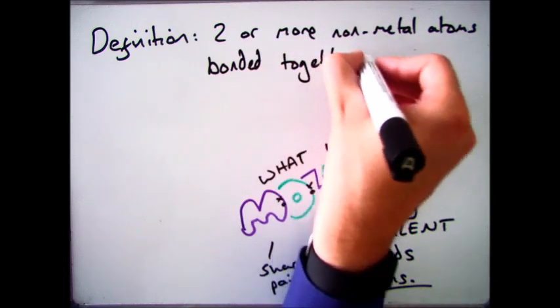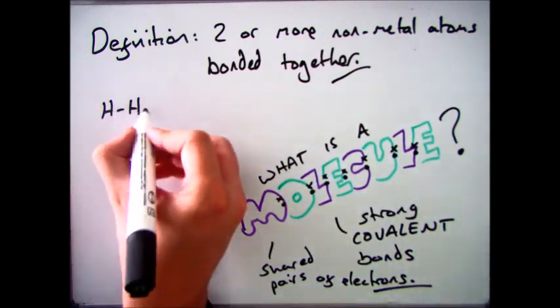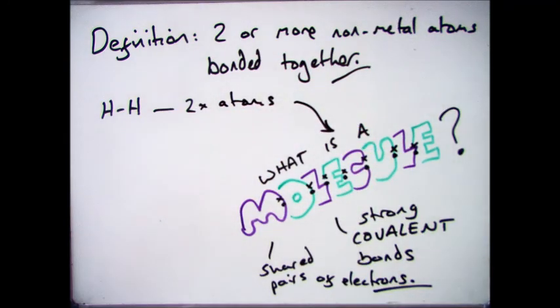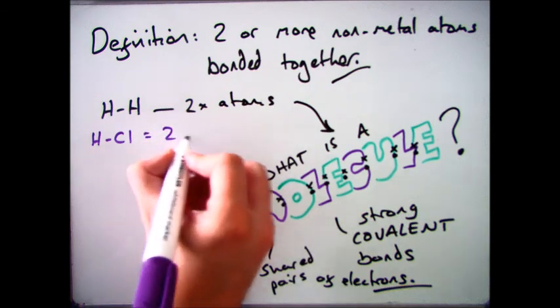Some of the key examples that you do need to know: we've got H2, so that's two hydrogen atoms. We've got hydrochloric acid, which is HCl, which are two different non-metals.